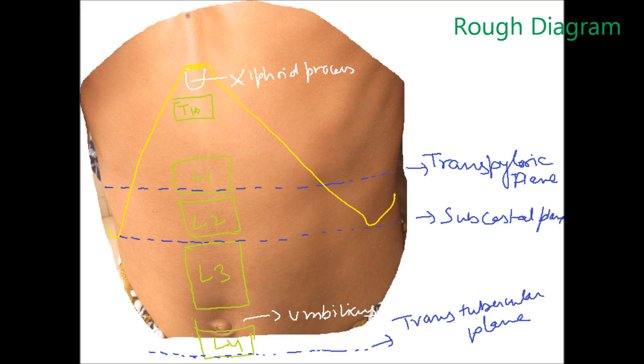Hi friends, today I am going to tell you something about the descent of testes. First of all, have a look at this abdomen and we will discuss some landmarks here. You can see the xiphoid process, the transpyloric plane which is lying in the lower border of L1 vertebra, subcostal plane in the upper border of L3 vertebra.